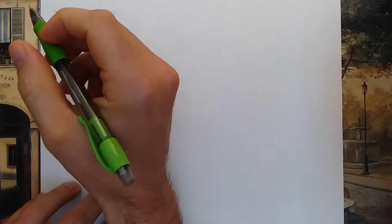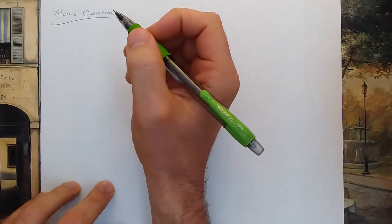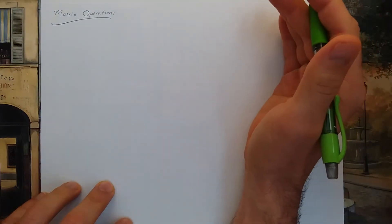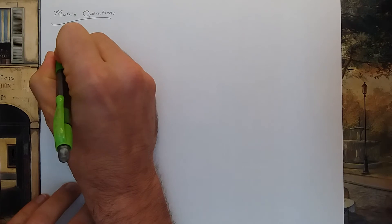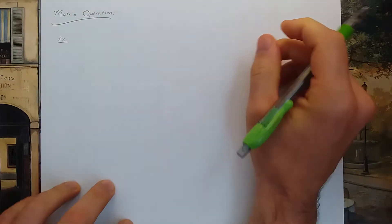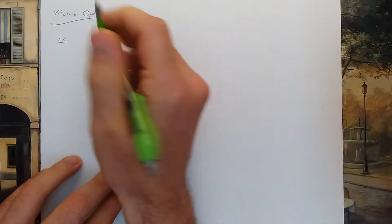Matrices can be multiplied by constants and added together if they're the same size. If I do one example, you'll see instantly what I'm talking about here.